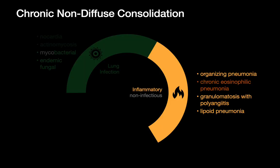The second category of diagnoses we need to really think about are the inflammatory disorders: organizing pneumonia, chronic eosinophilic pneumonia, granulomatosis with polyangiitis, and lipoid pneumonia.